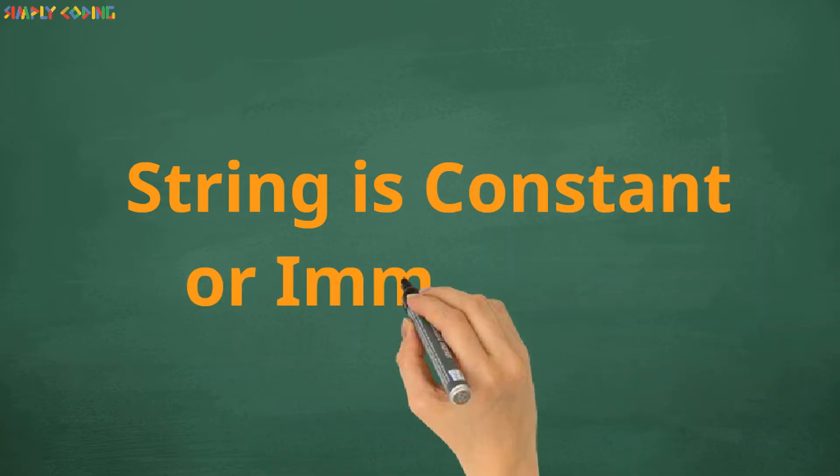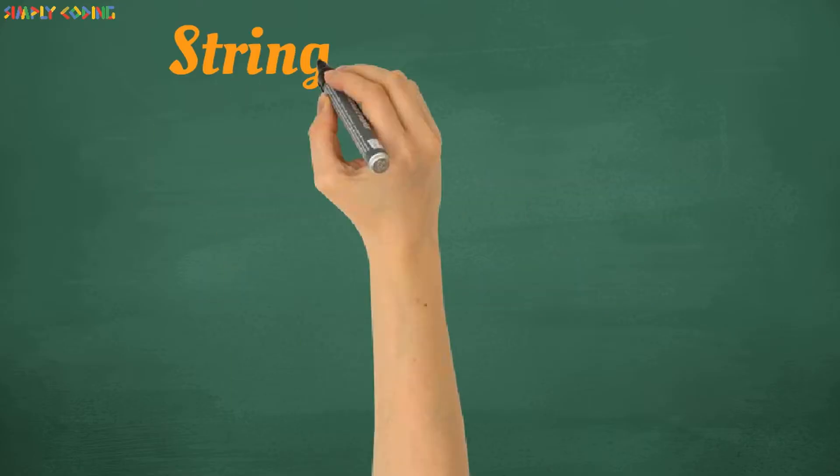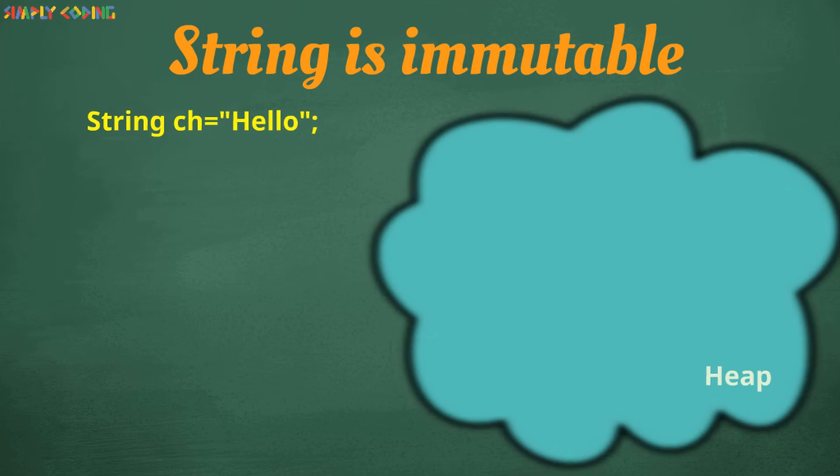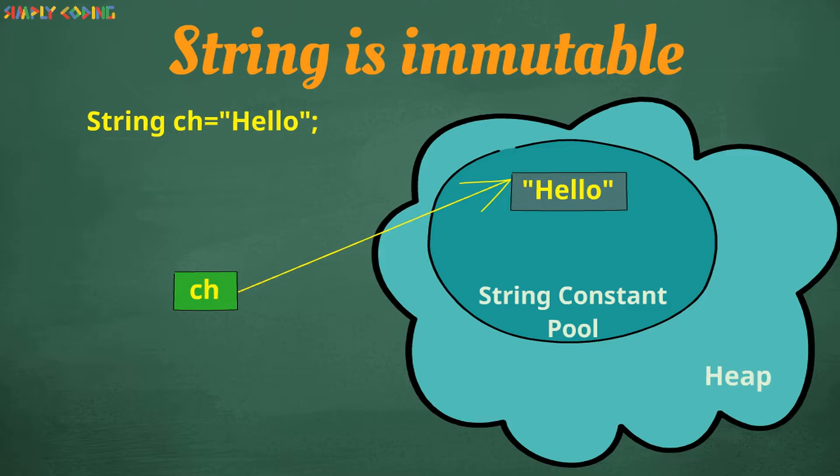String is constant or immutable in Java. Let me explain what this means. When you create a new String object ch, Java has something called a string constant pool in the heap, which stores the value, and ch refers to it.